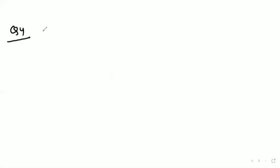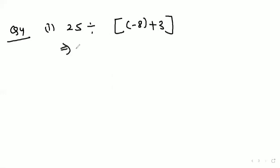Now Question Number 4: find the value. First part — 25 divided by (minus 8 plus 3). We solve the bracket first: minus 8 plus 3 equals minus 5. Then 25 divided by minus 5 gives the answer minus 5.